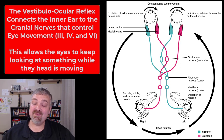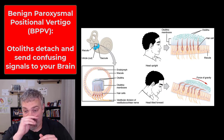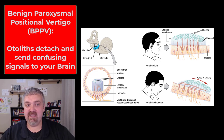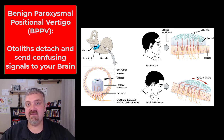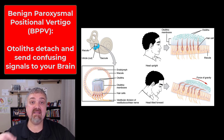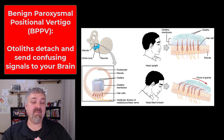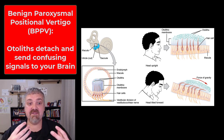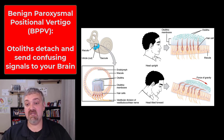Now let's talk about what happens when it doesn't work. A very common example is something called BPPV, or benign paroxysmal positional vertigo — I had many patients with this type of vertigo when I was still in practice. These otoliths can actually detach from where they sit on top of the hair cells and land inside one of the semicircular canals, especially when you're lying down. If this happens, it causes the semicircular canals to send the wrong signals to the brain, confusing it and leading to spinning and dizziness.